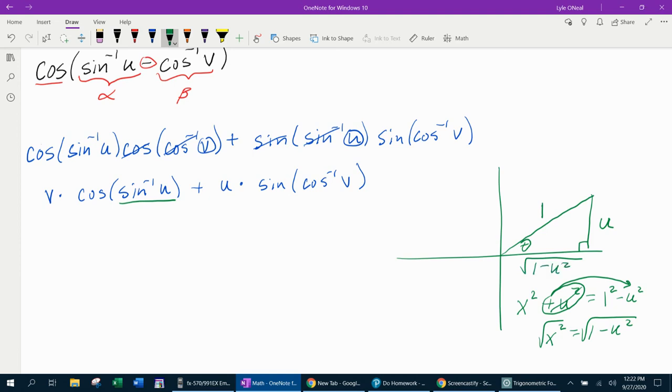And then I can evaluate this entire expression because it's cosine of this angle. Cosine is x over r, which would be square root of one minus u squared over one. But anything over one is itself. So that's going to simplify to v times square root of one minus u squared. That's all of this guy evaluated.